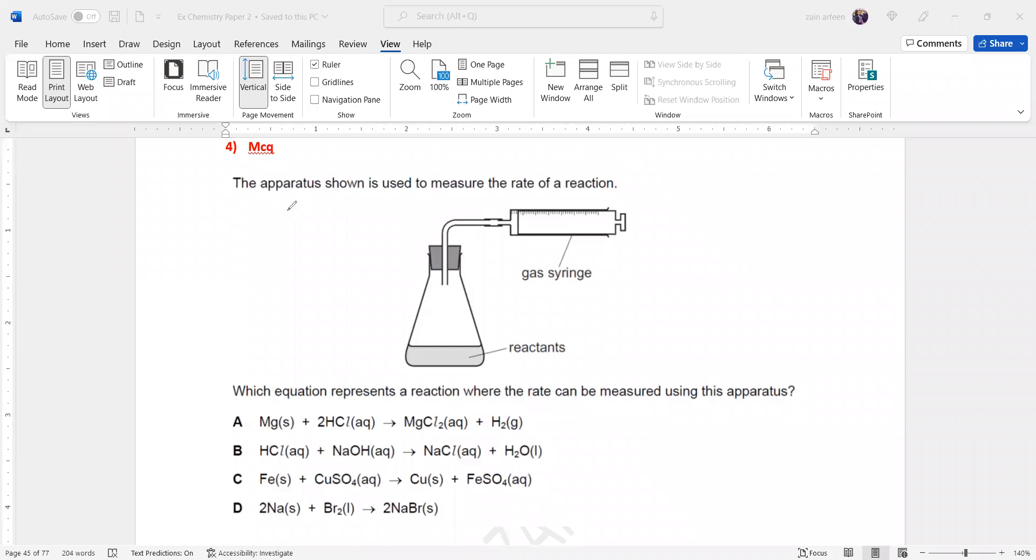So when we check this question, the apparatus shown is used to measure the rate of reaction by measuring the volume of a gas because a gas syringe is correct. So which equation represents a reaction where the rate can be measured using this apparatus? So we just have to check the gas should be given out.